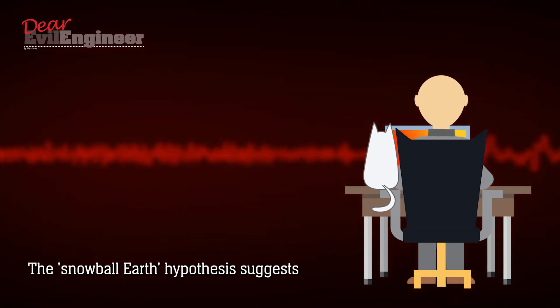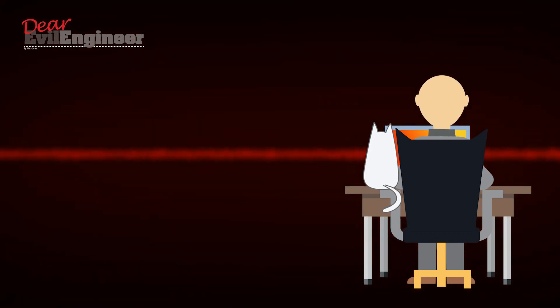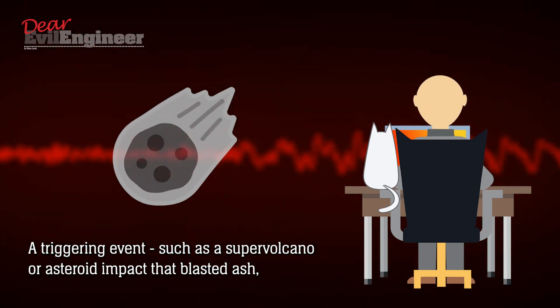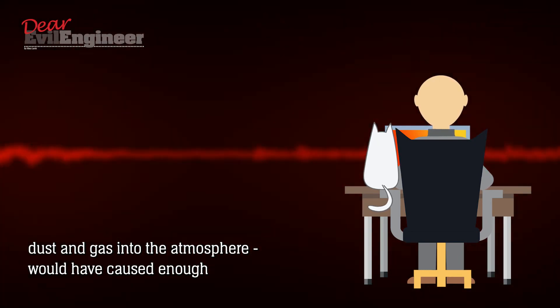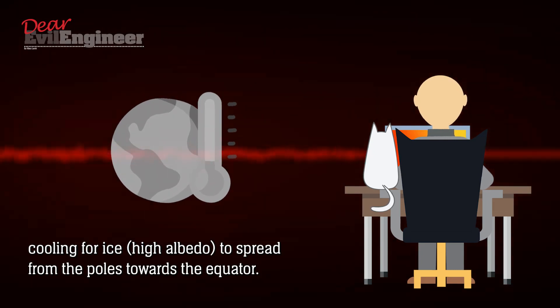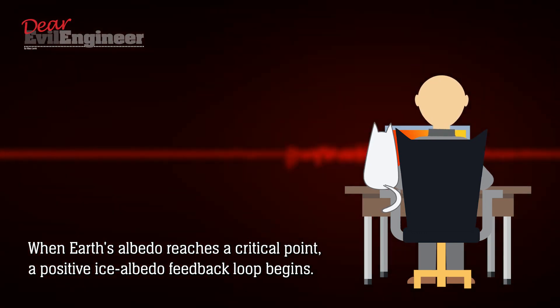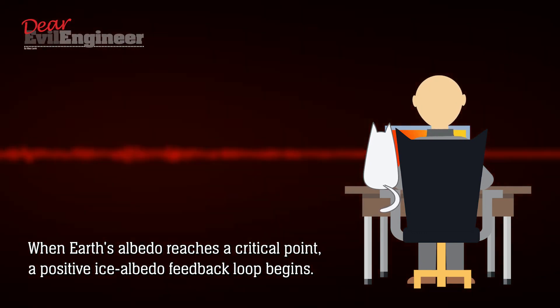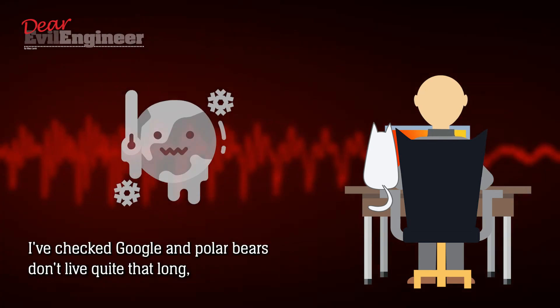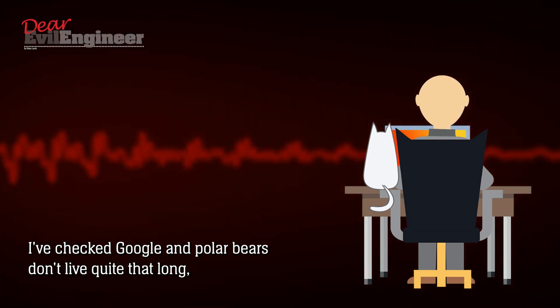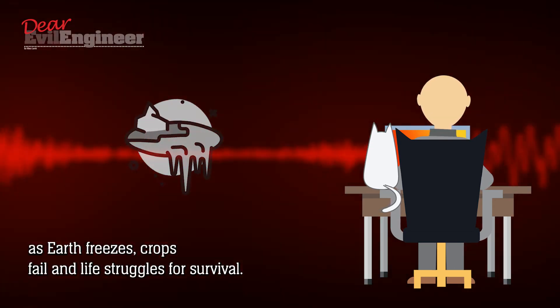The snowball Earth hypothesis suggests Earth's entire surface may have been frozen sometime in history. A triggering event such as a supervolcano or asteroid impact that blasts ash, dust and gas into the atmosphere would have caused enough cooling for ice, high albedo, to spread from the poles towards the equator. When Earth's albedo reaches a critical point, a positive ice-albedo feedback loop begins. It would take about a thousand years to reach snowball Earth. I've checked Google and polar bears don't live quite that long, but you'd still have many years of enjoyment as Earth freezes, crops fail and life struggles for survival.